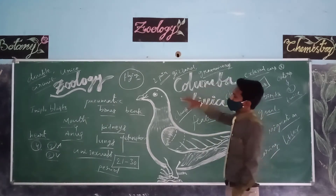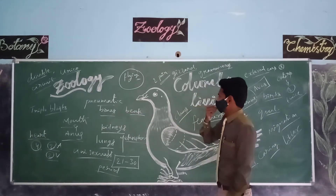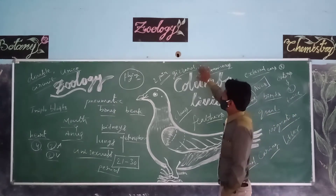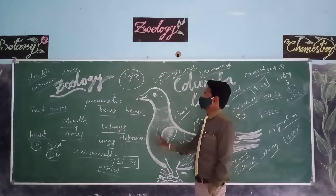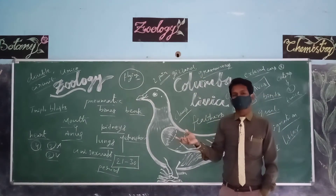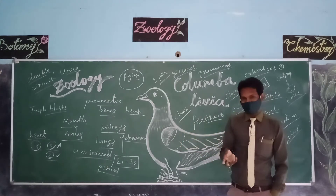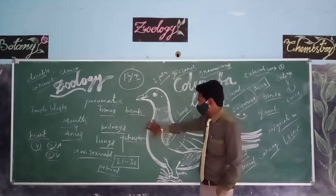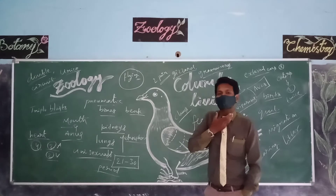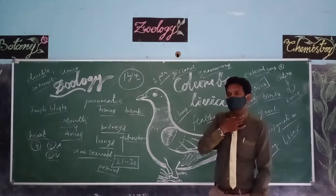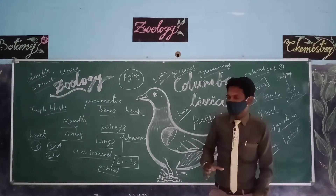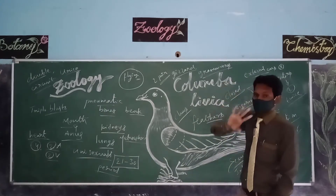In the digestive system, the gut starts from the mouth and ends with the anus. Among the different parts, the gizzard is a special part located in the digestive system. The gizzard temporarily stores complex food particles to break them down into simpler ones — this is called partial digestion. In a hen's body, we can observe and touch the gizzard clearly, where food grains are stored just below the neck.